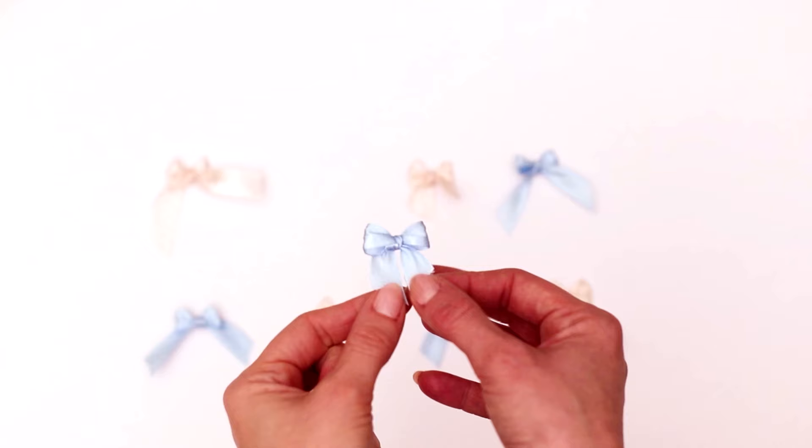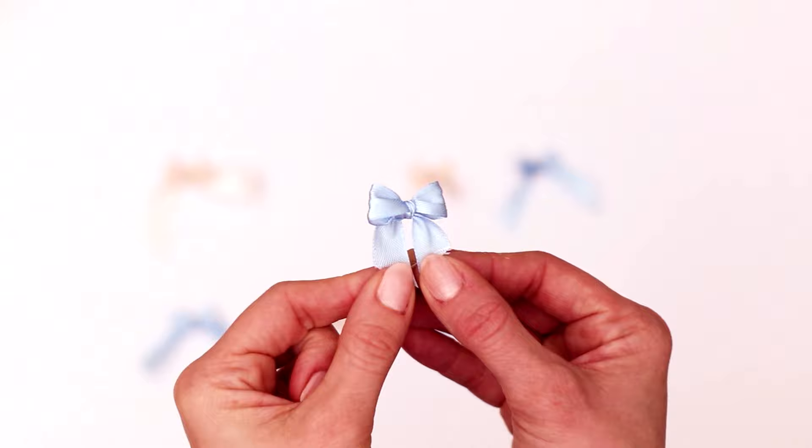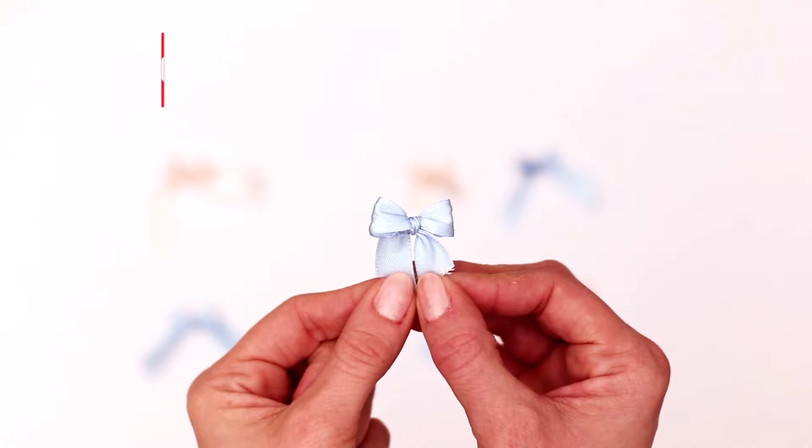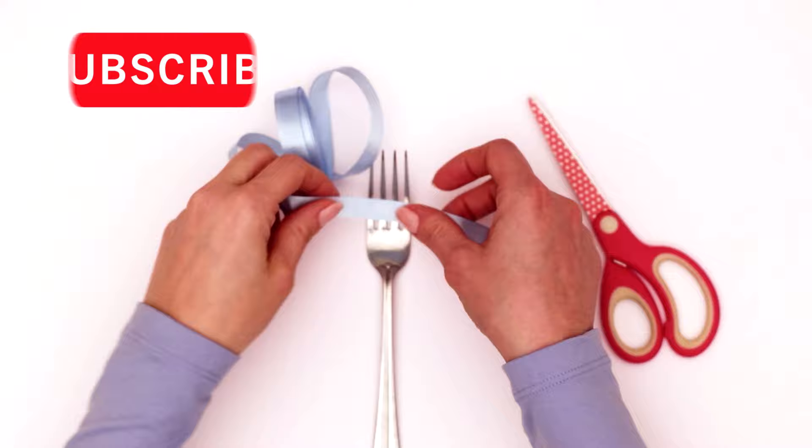You've probably seen these made before. I just love how they look. Here it is in a solid color so it's easy to learn. Alright, so we're going to start off with a fork, some ribbon and scissors. You're going to go over the fork and leave a few inch tail.